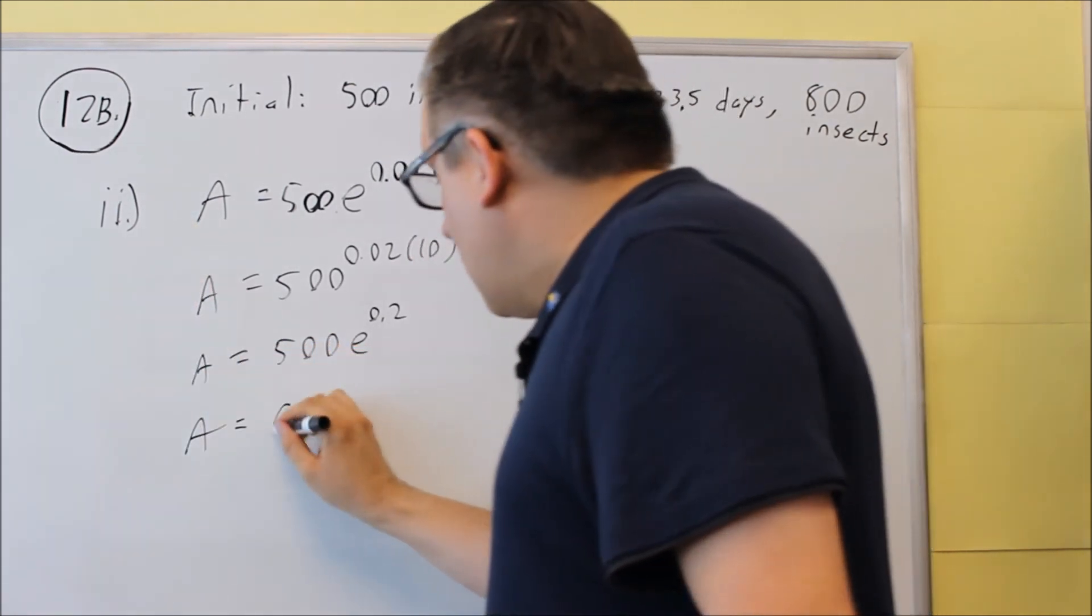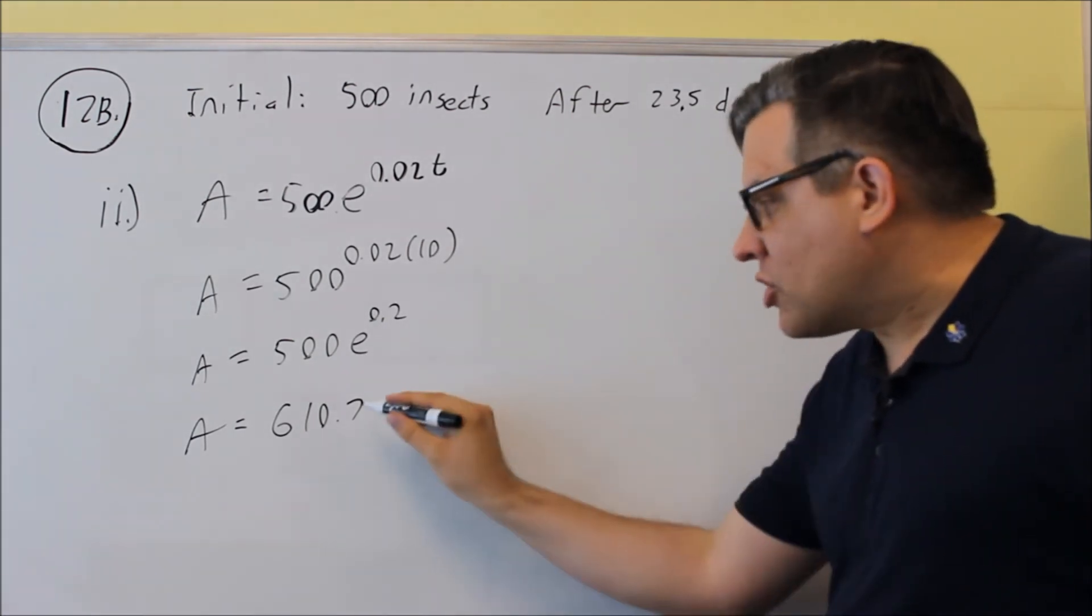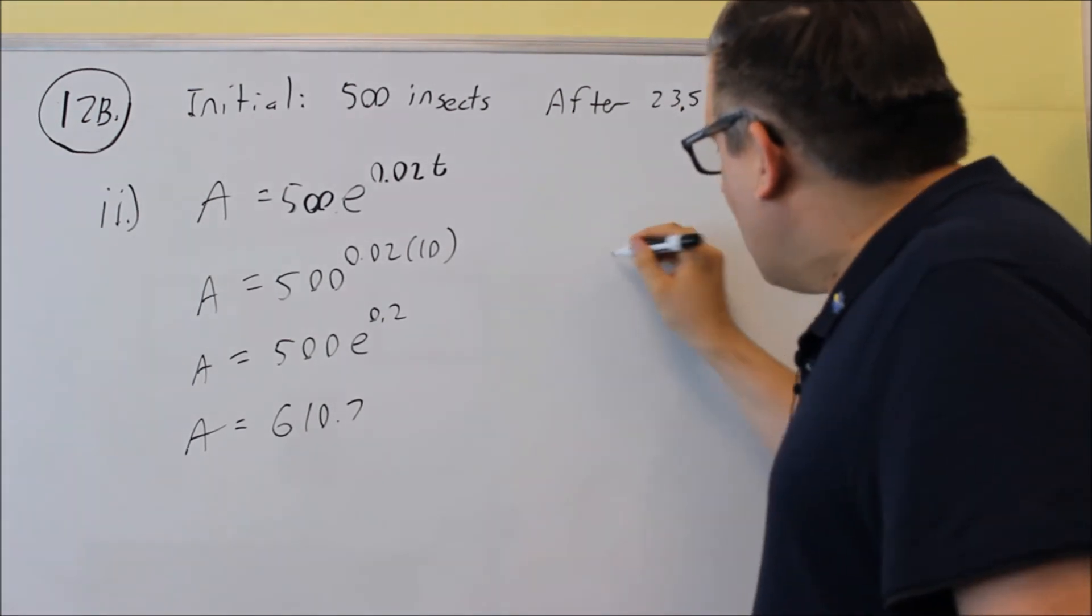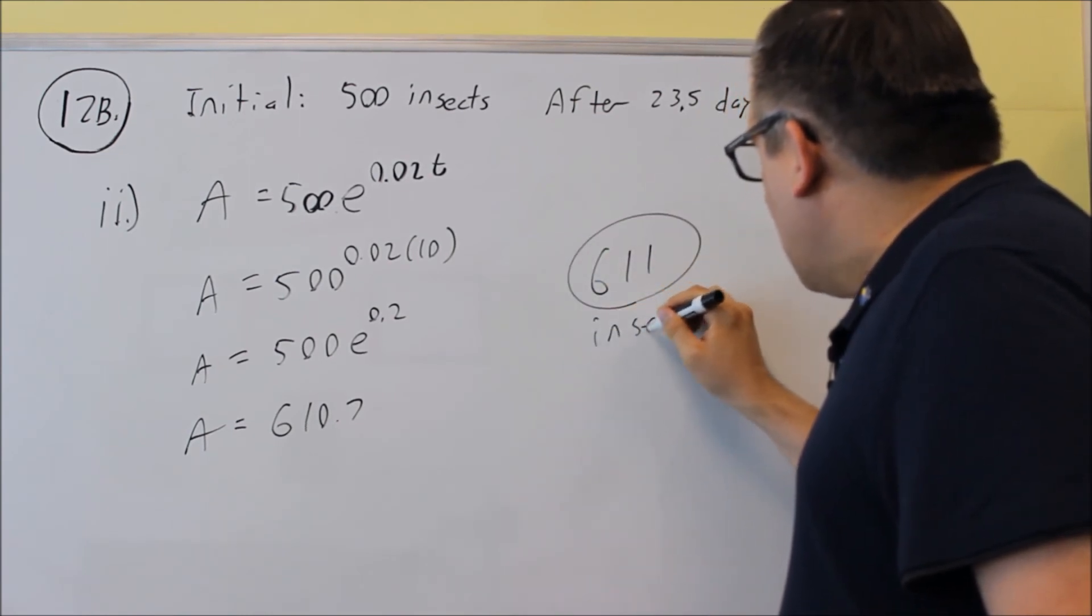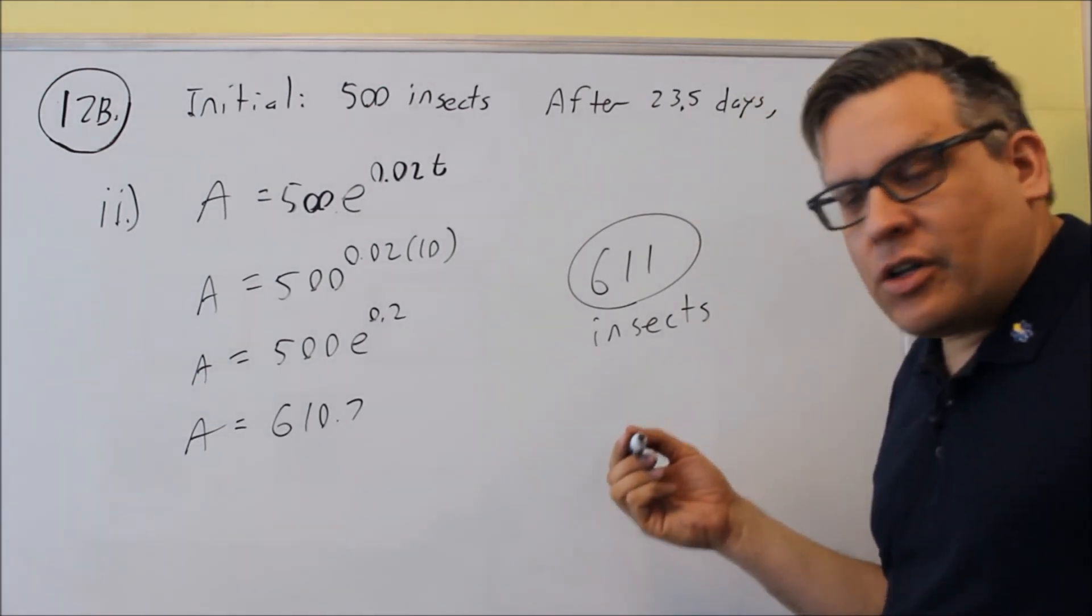When we do that, we'll get 610.7. They want you to round to the nearest whole number, so we're going to round up because that number is .5 or above, which means that we would put 611 insects, of course, for this one because that's what we're talking about here.